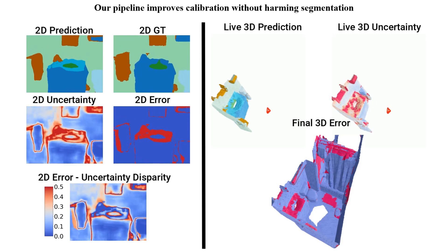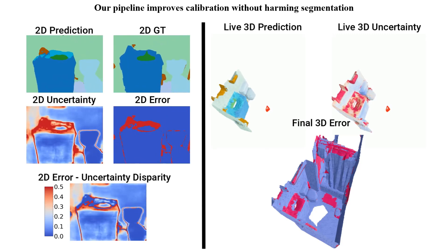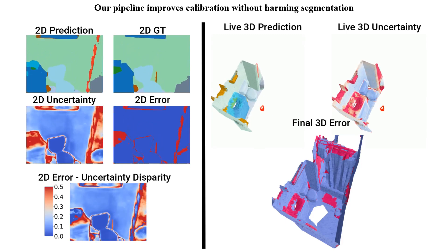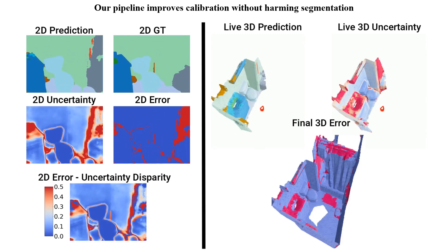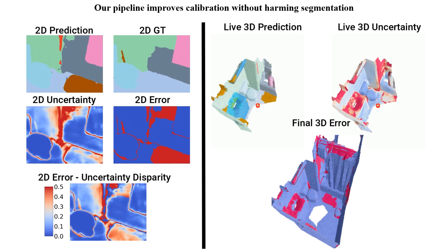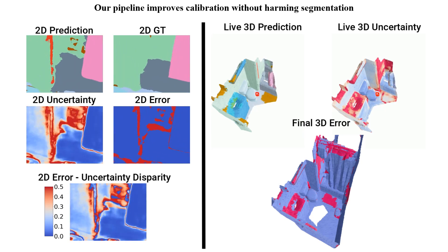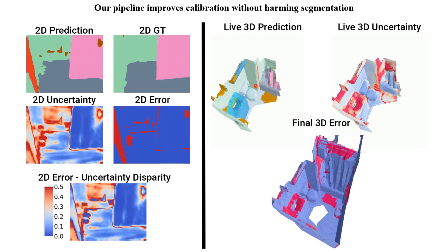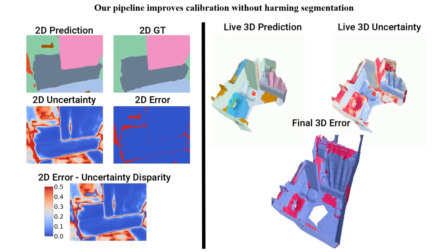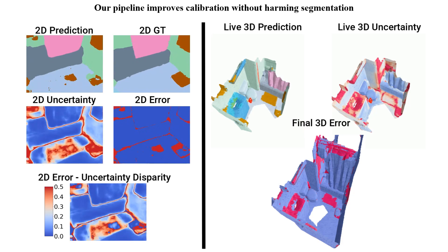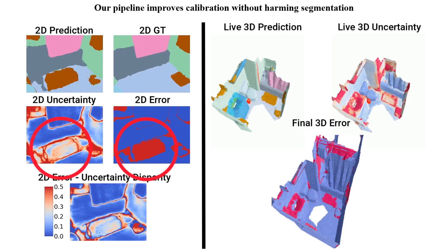In contrast, our method — which jointly learns segmentation calibration, fusion strategy choice, and sample weighing — can better leverage 2D calibration and produce a well calibrated 3D model. While the 3D segmentation model still makes mistakes, they are now associated with lower confidence, resulting in a better calibrated output. Notice how we still preserve 2D calibration, but now produce a much better calibrated 3D output.